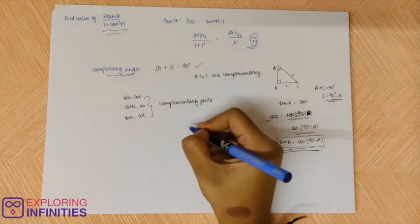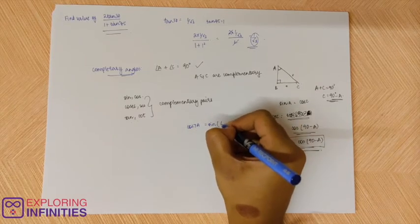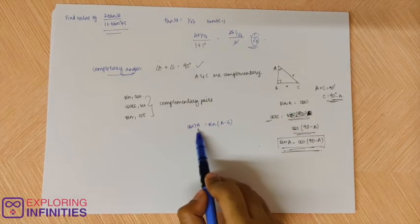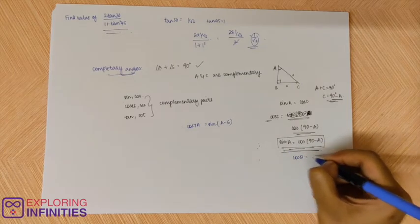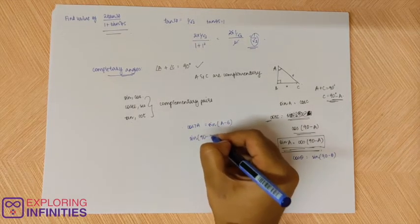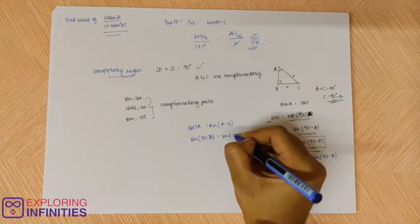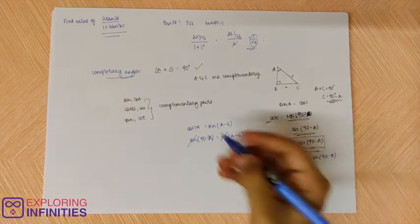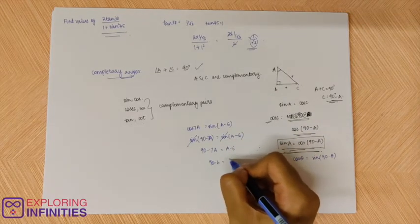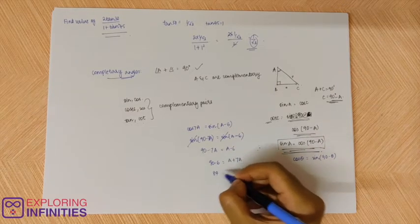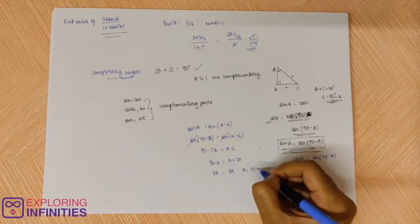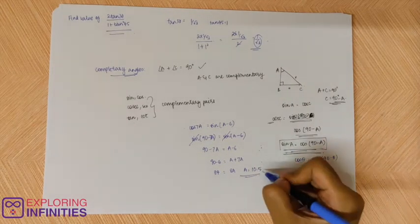Look at this example. Cos 7a is equal to sin a minus 6. When you look at this it is very difficult to solve because it is cos and sin so we can't solve this. Now I will try to convert this cos into sin. How will I convert? Cos theta is equal to sin 90 minus theta. So that is sin 90 minus 7a is equal to sin a minus 6. So 90 minus 7a is equal to a minus 6. 90 minus 6 is 84 is equal to 8a. So a is equal to 10.5. That is how you calculate.